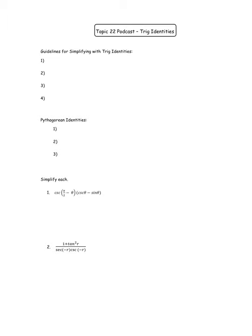We start today with the guidelines for simplifying. The first guideline — the typical thing people try — is to rewrite everything in terms of sines and cosines. So guideline number one: write in sines and cosines. For example, if you saw a tangent, you would write that as sine over cosine.